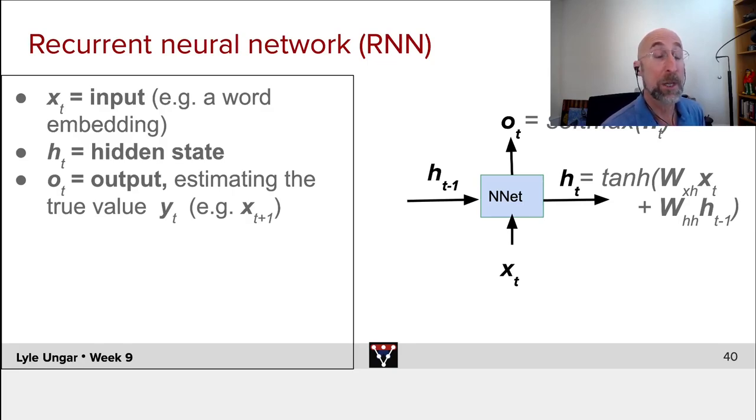So what do we have? Simple feedforward neural network inside here, taking in the current observation x, the preceding hidden state, outputting a new hidden state, and through one more function, an output. And again, where I've shown the hyperbolic tangent and the soft max, you could put as many neural nets as you want.